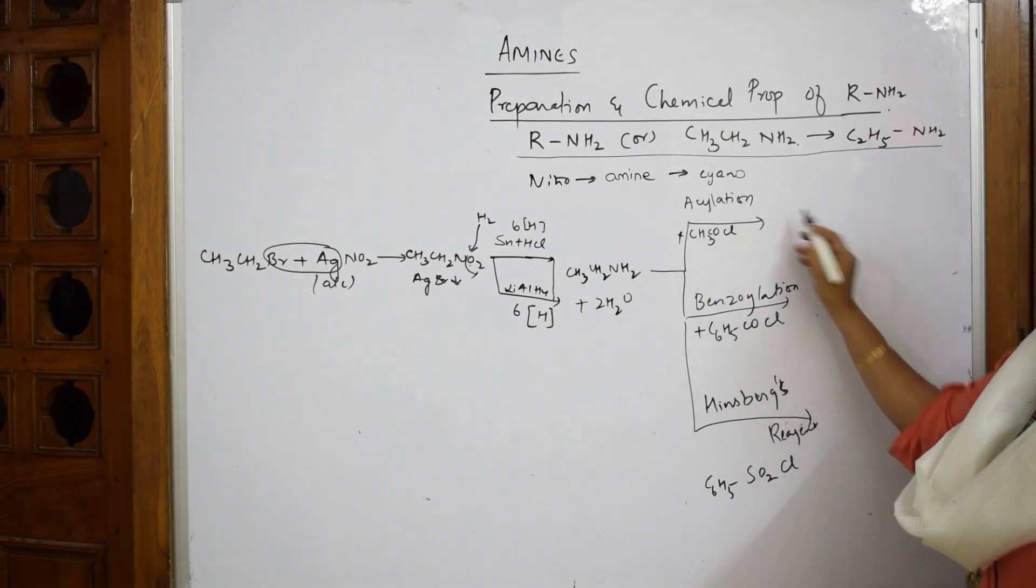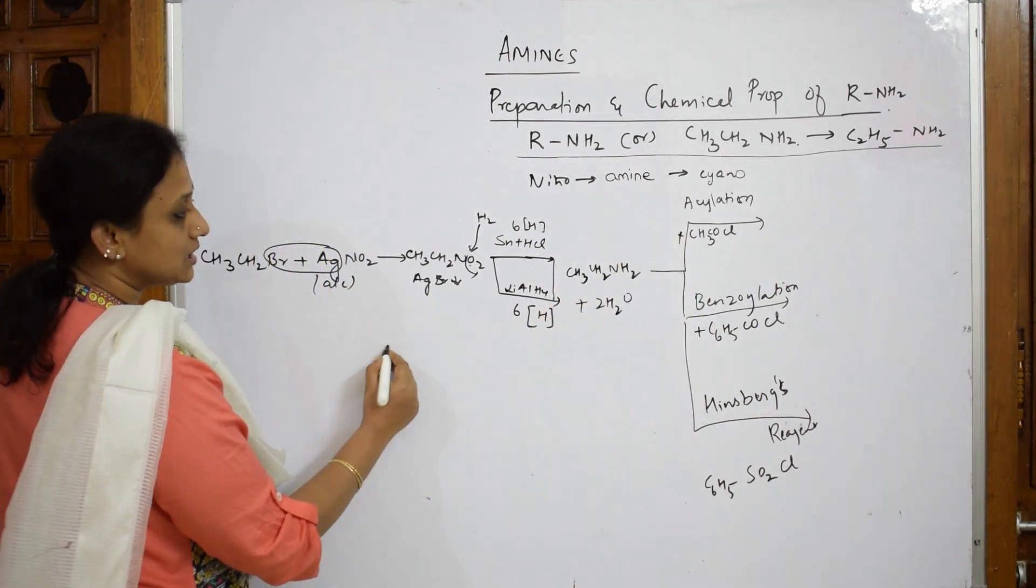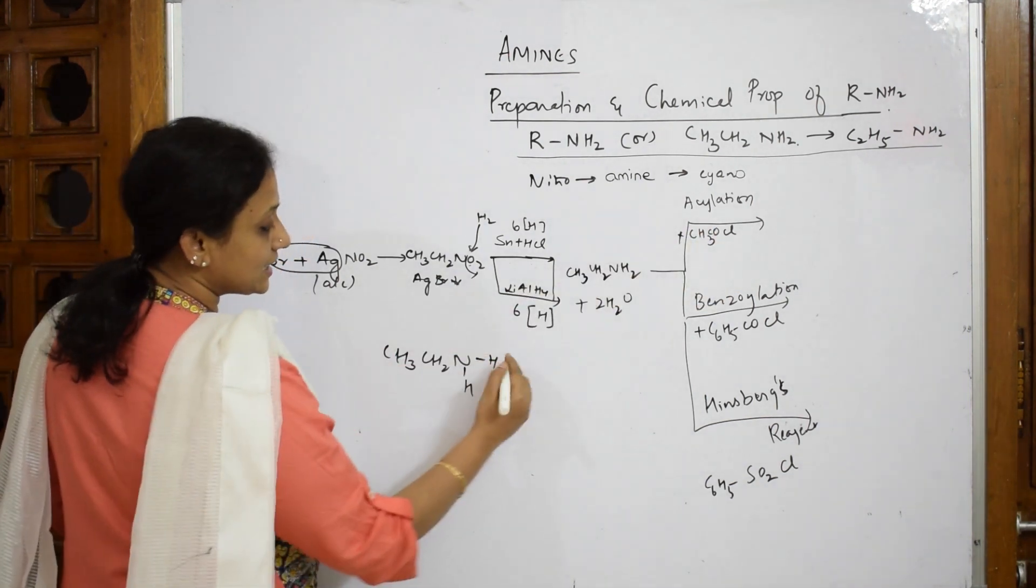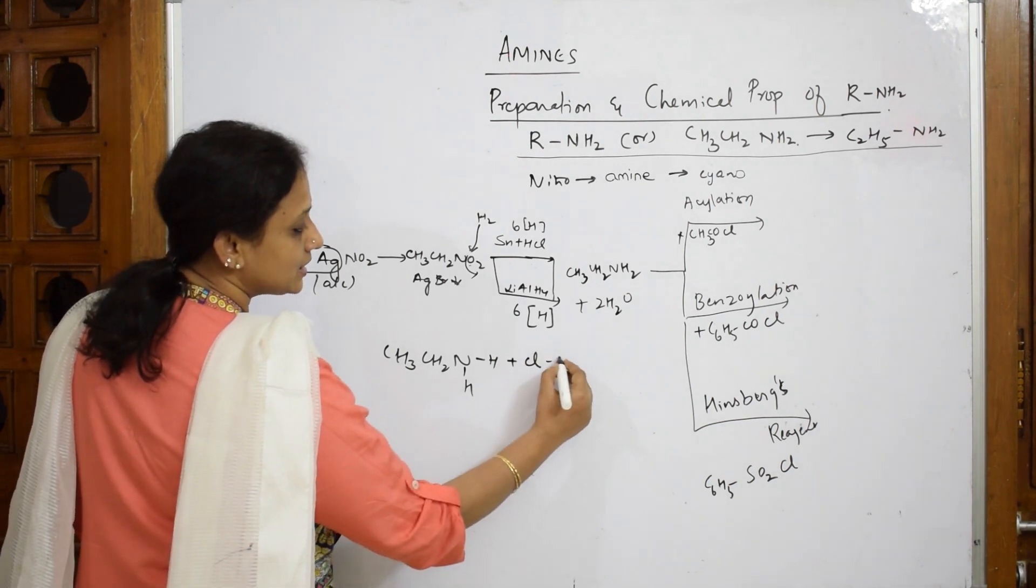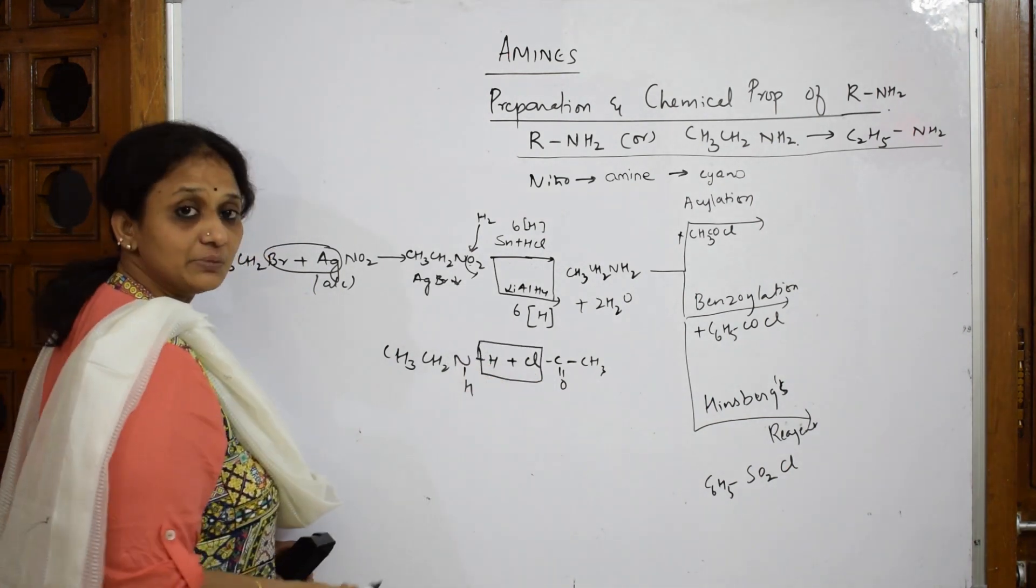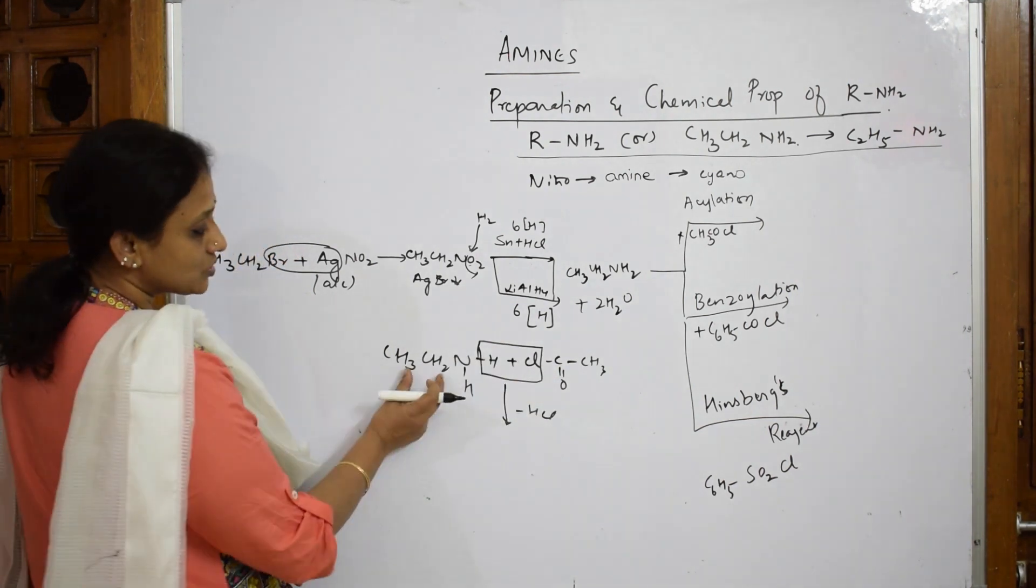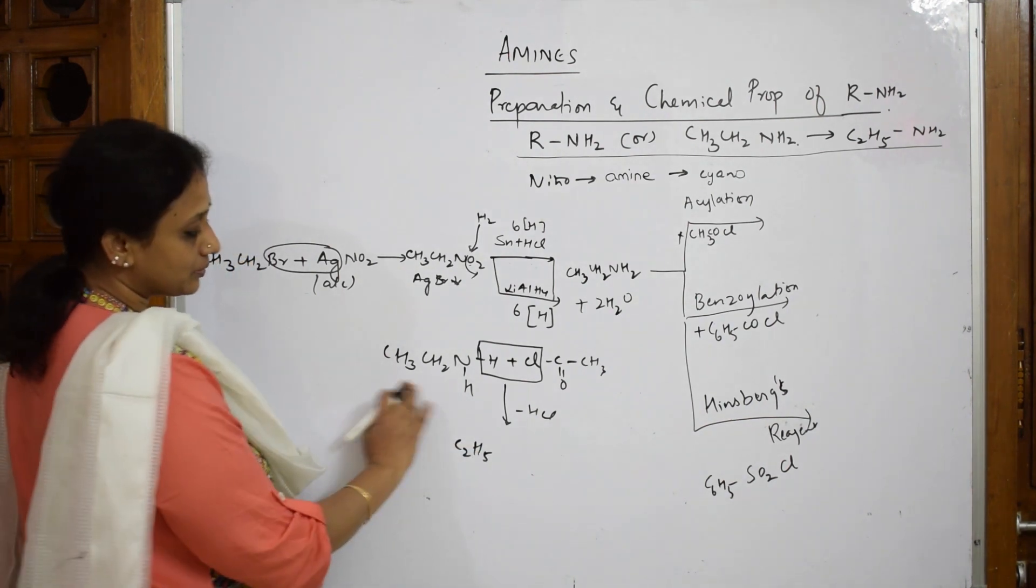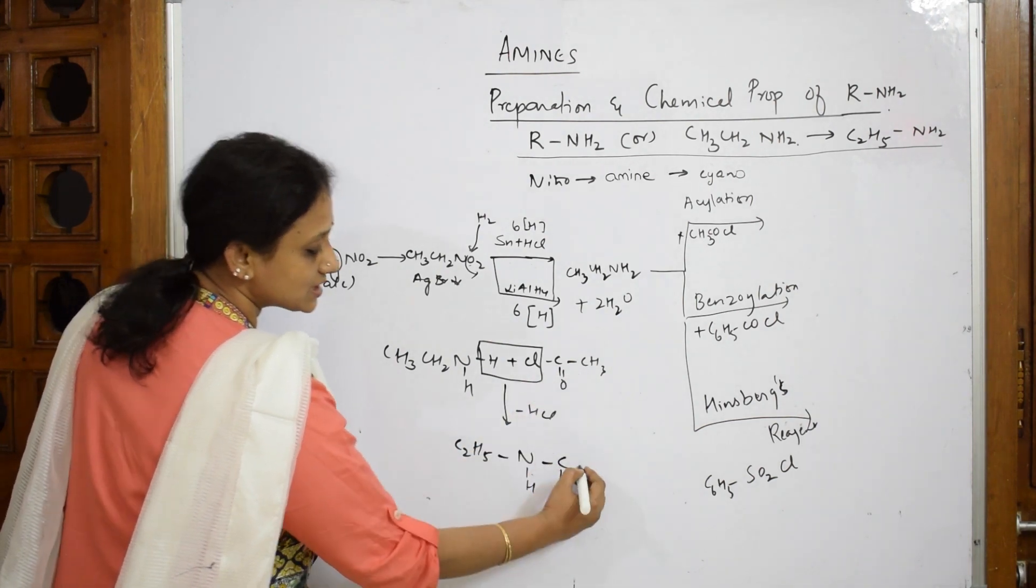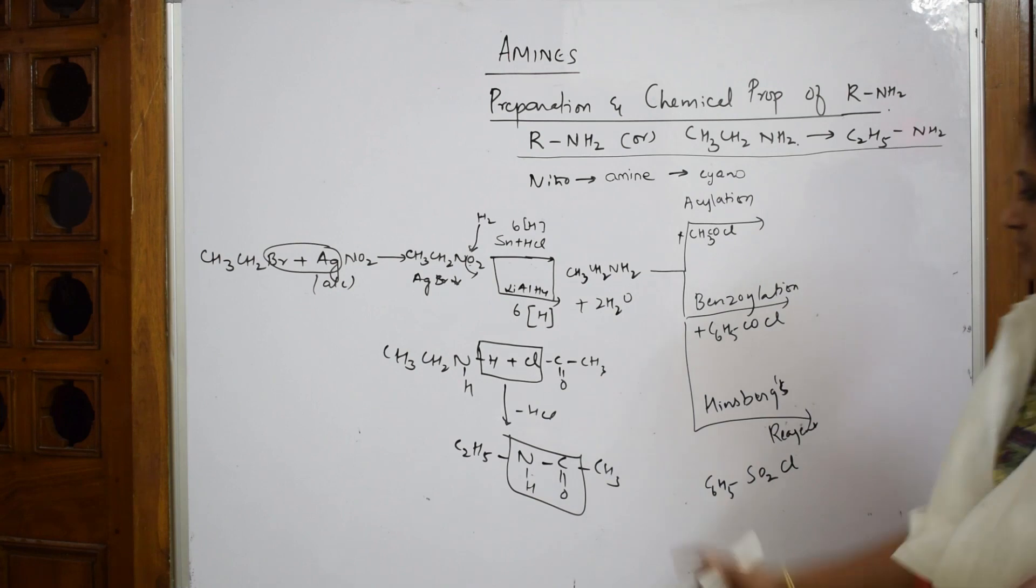Let me write the acylation reaction. I'm taking CH3CH2N with one hydrogen here, one hydrogen here. I'm going to add acyl group: Cl, C double bond O and CH3. As soon as you add acyl group, HCl is eliminated. When HCl is eliminated, this group joins to this group. So I'll write this as C2H5 - no problem, right? So now NH, C double bond O, CH3. This is called amide.